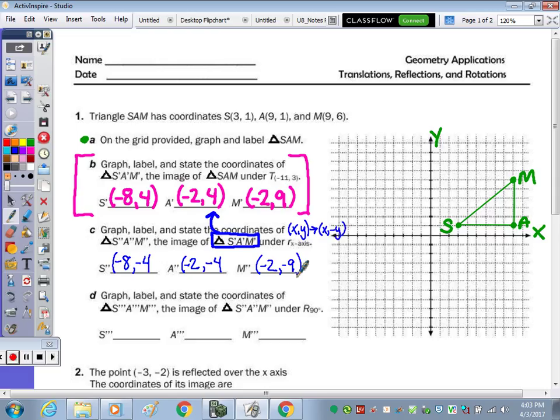So let's graph this triangle, S double prime, A double prime, M double prime. So left 8: 1, 2, 3, 4, 5, 6, 7, 8, down 1, 2, 3, 4, this is S double prime. A is negative 2, negative 4, so over 2 and down the same number. And then negative 2, negative 9, so 4, 5, 6, 7, 8, 9. So there's M double prime.